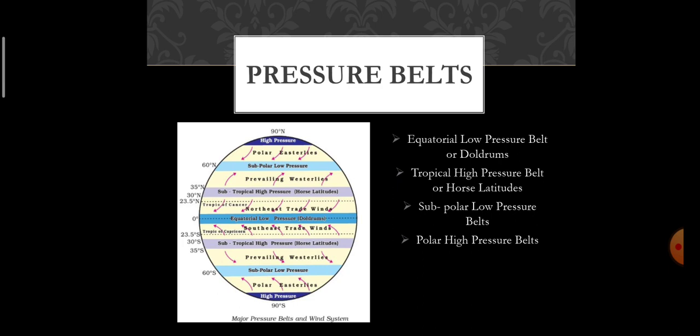Sub-polar Low Pressure Belt: Due to earth's rotation, the air swings towards the equator and thins out over the areas around 60 degrees north and 60 degrees south. This creates the sub-polar low pressure belt.